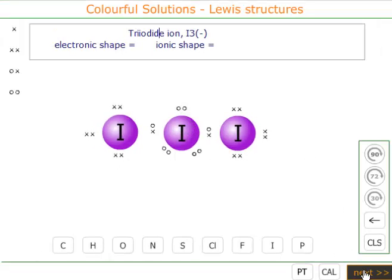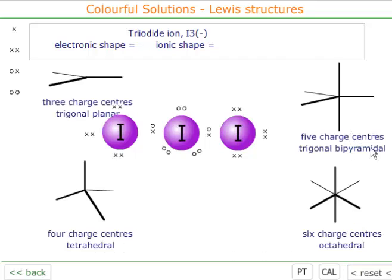The shape adopted for 5 charge centers is trigonal bipyramidal. So we now need to decide where do the lone pairs go and where do the bonding pairs go. Well, the bond angles in the equatorial sites—that's the ones in the middle—are at 120 degrees to one another, and this minimizes the repulsion between the lone pairs. So the three lone pairs occupy the equatorial sites.